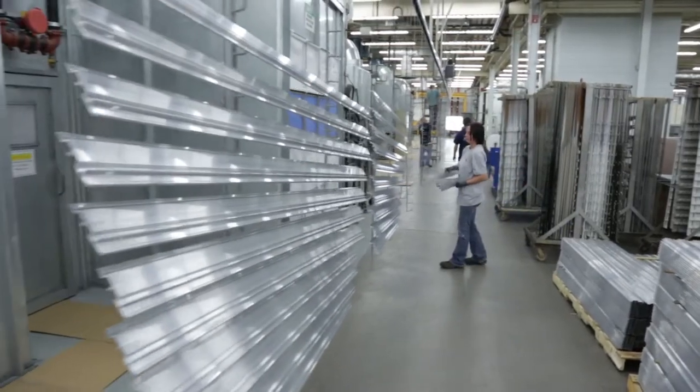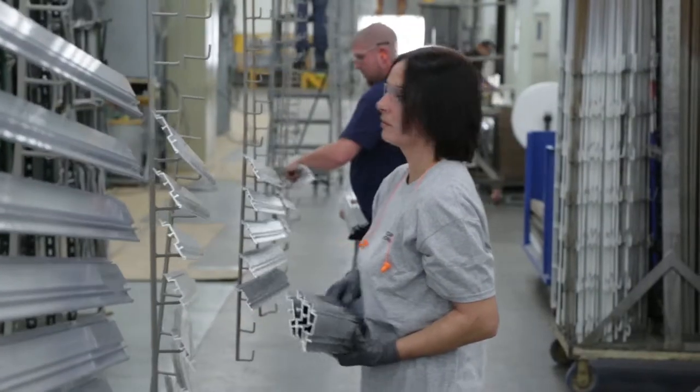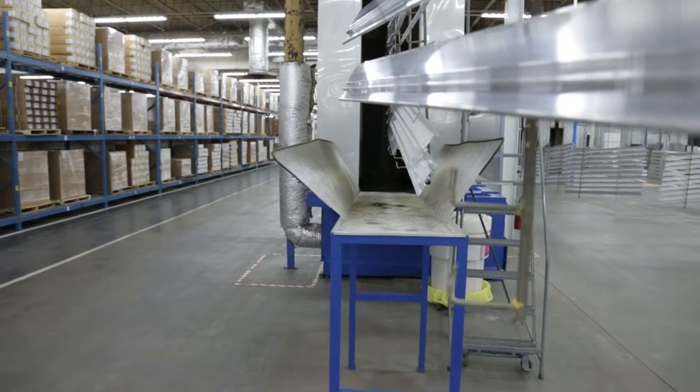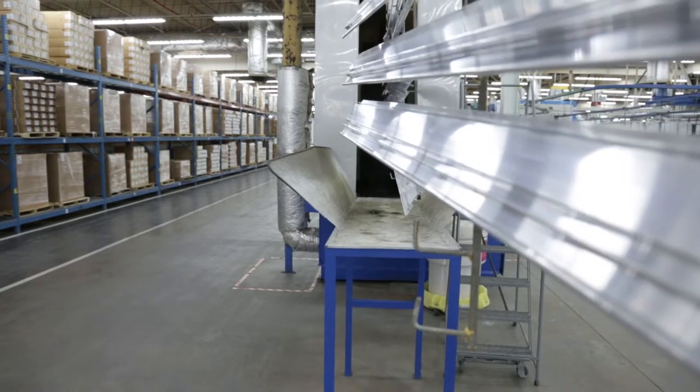The painting process begins by placing parts onto custom racks that are designed to minimize marking. The parts then pass through a five-stage wash and pre-treatment system. This cleans and prepares parts to accept a paint finish.